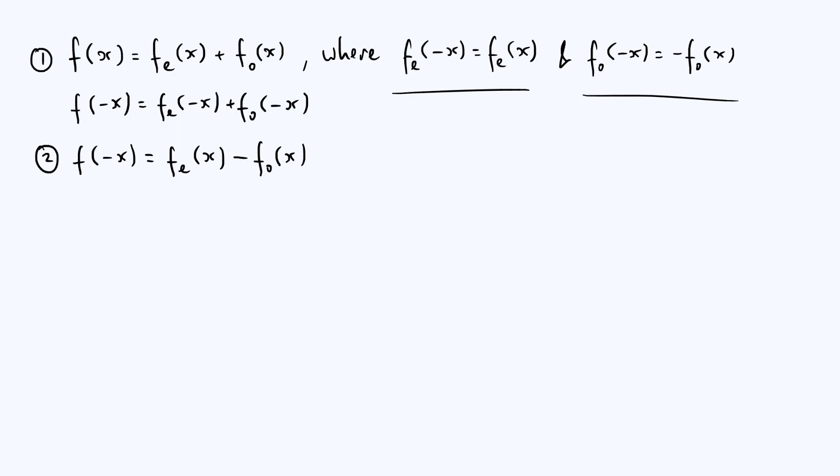Now because equations one and two only differ by a sign, the sign in front of fo, you can solve them pretty straightforwardly. Firstly, by adding equations one and two together to make the fo cancel out. If you do that, the right-hand side will just be two times the even part, fe of x. And the left-hand side, I'm actually flipping the sides around, but the left-hand side is now f of x plus f of minus x.